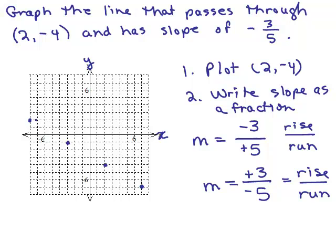The line has a negative slope — it slants in the correct direction — and it passes through the point 2, negative 4. The last step is to get a straight edge and draw a straight line as carefully as you can through those points. And there's the line.